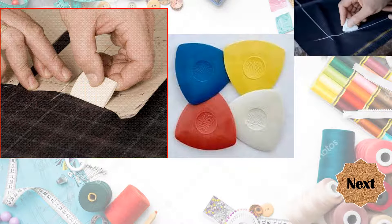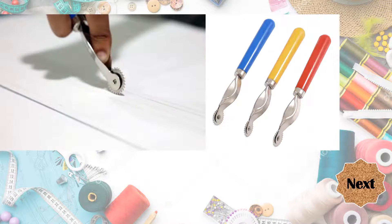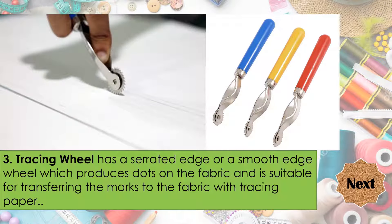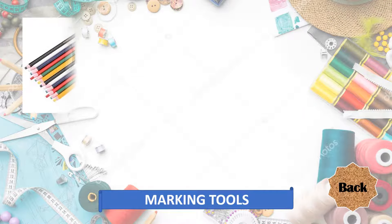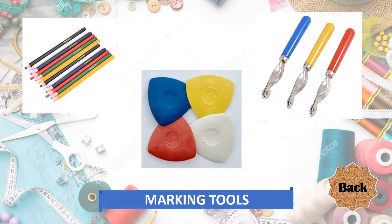How about this one? Yes! It is a tailor's chalk, and it is essential as a marker used on materials like fabric. Tailor's chalk is available in a range of colors. It is the tracing wheel, which has a serrated edge or a smooth edge wheel that produces dots on the fabric and is suitable for transferring marks to the fabric with tracing paper. The most commonly used marking tools are the dressmaker's pencil or dermatograph, the tracing wheel with tracing paper, and the tailor's chalk.